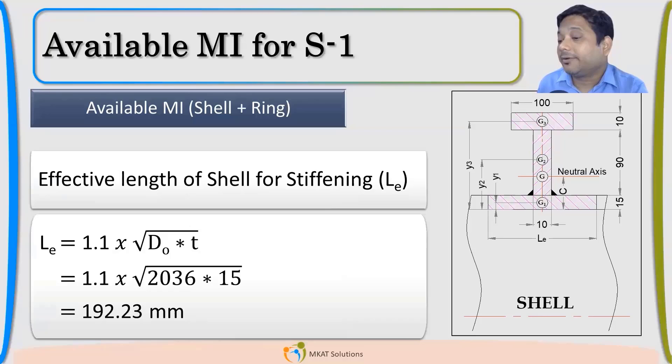Now, the next activity will be to find the LE because for area calculation, I need the length. 1.1 times under root D0 T. So, with this, I will be able to get the LE value, 192.23.